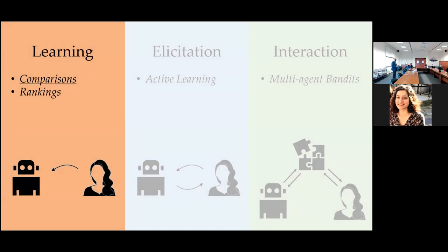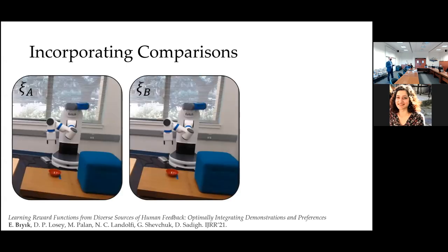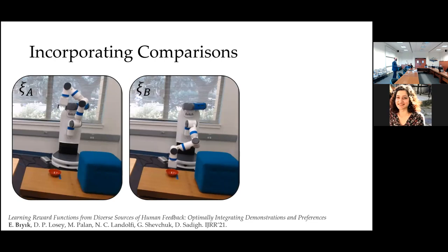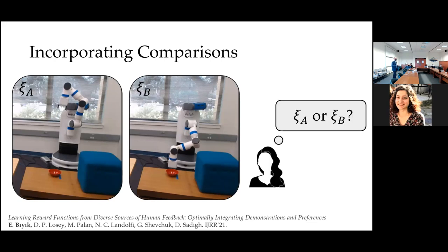When I say comparative feedback, it can be comparisons, rankings, or other forms I'll discuss. With comparison data, the robot shows two different trajectories to the human, then asks whether they prefer trajectory A or trajectory B. The human is not controlling the robot — the robot executes two different trajectories and the human simply states their preference.